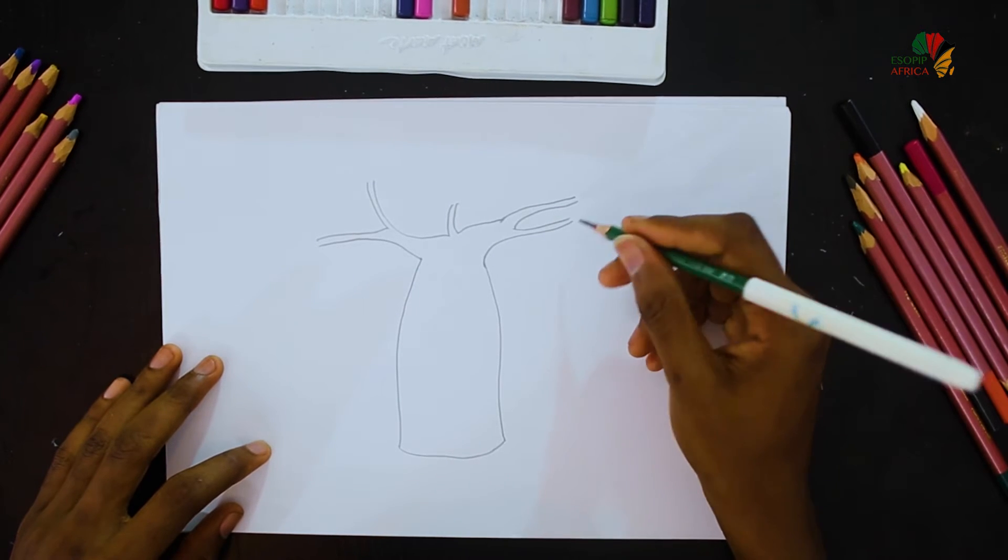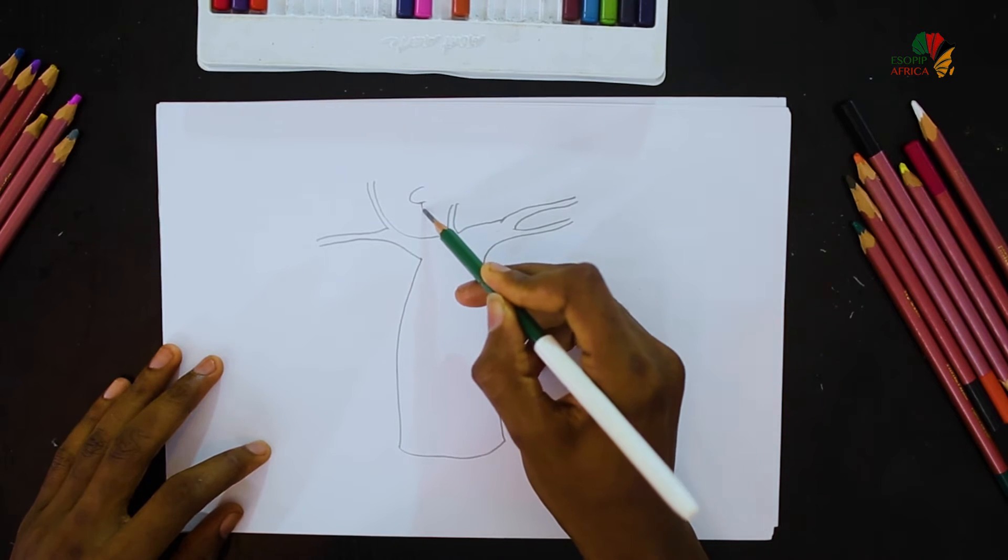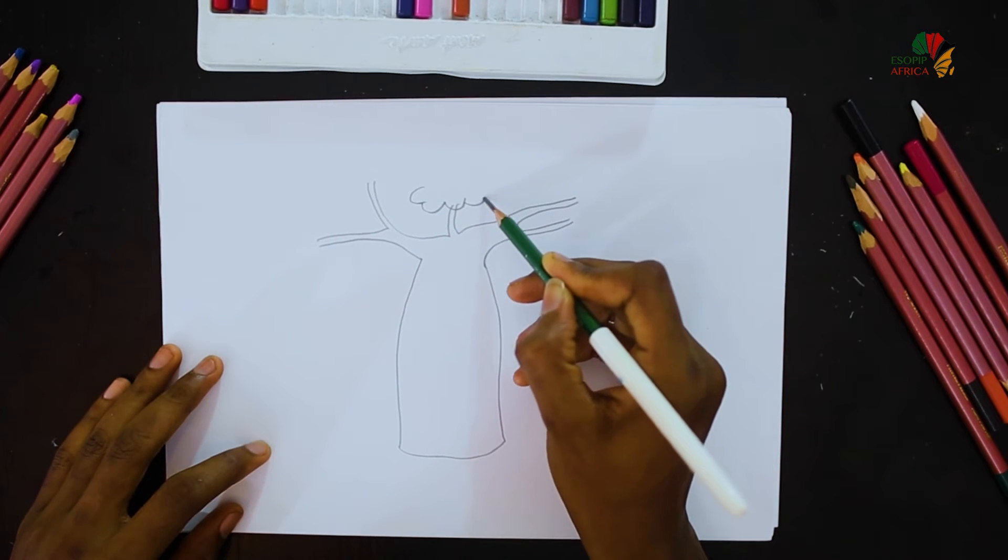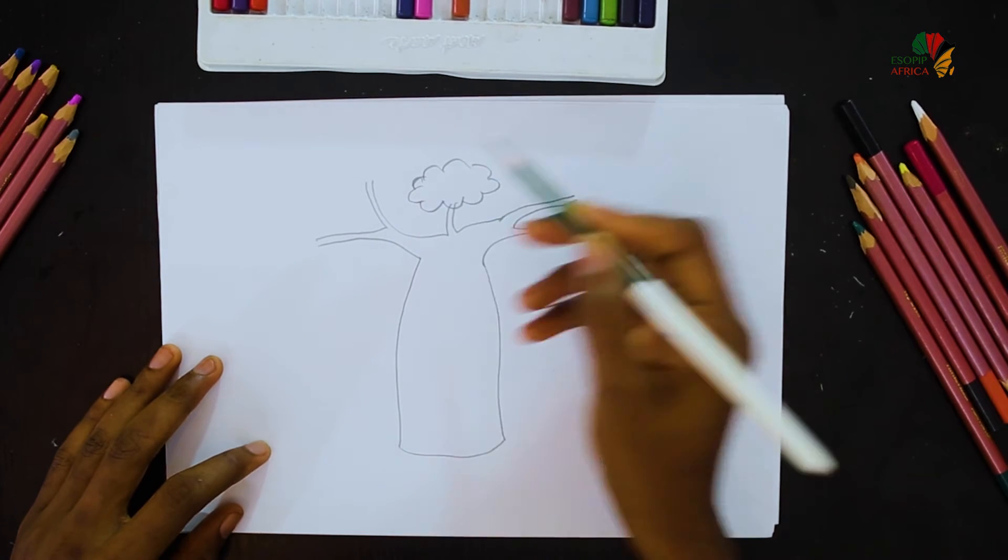Then I'm going to draw the leaves of the baobab tree. I'm going to draw them using circular lines.